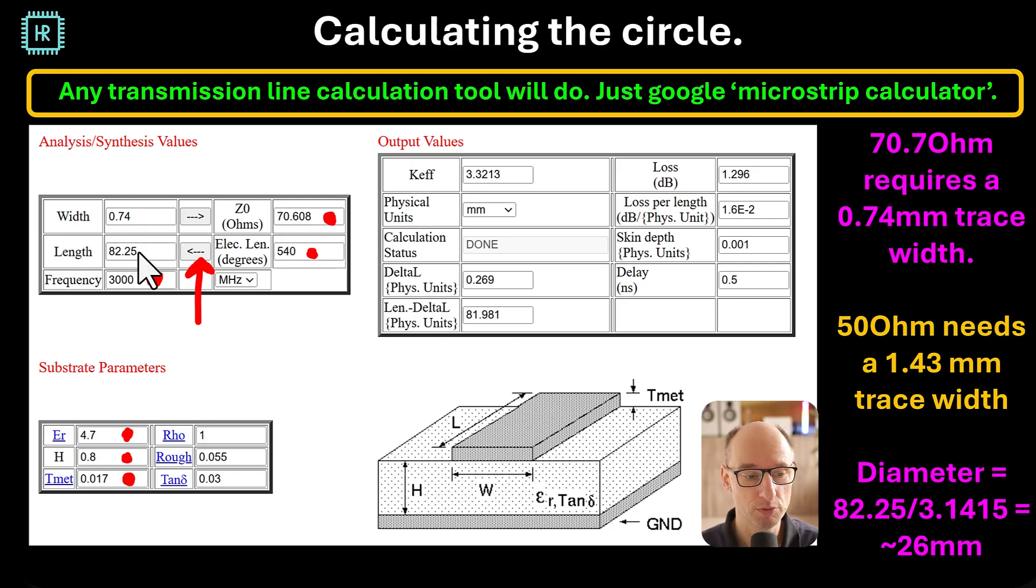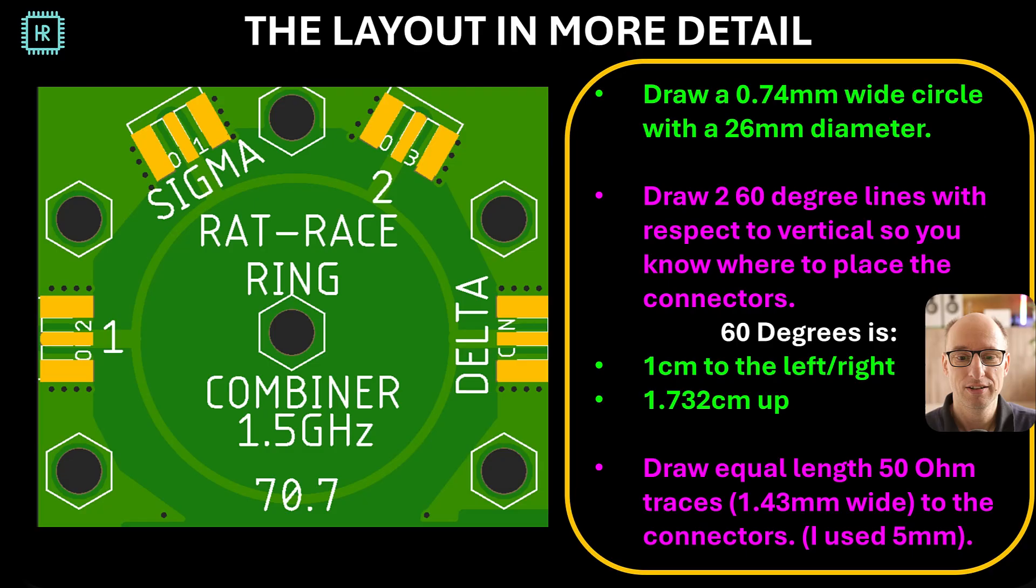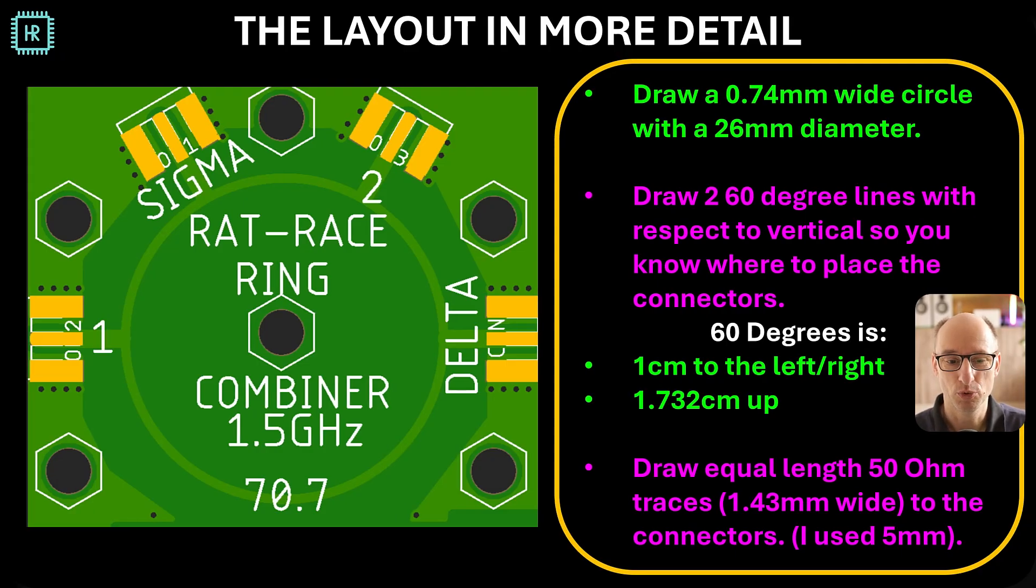So now we know that we need an 82.25 length of trace to get 540 degrees, and that turns out to be a diameter of 26 millimeters. The trace width is 0.74 millimeters for 70 ohms, and for 50 ohms, if you would fill in 50 ohms here and press calculate again, you would see that you need 1.43 millimeters.